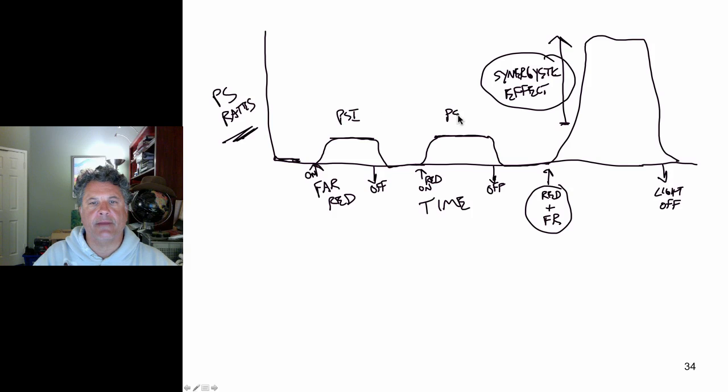Remember, photosystem 2 has a reaction center with an absorbance peak at 680 nanometers, whereas photosystem 1 has a reaction center with an absorbance peak at 700, that is far red light, and P680 represents red light. So here we see the synergistic effect of utilizing both photosystems in producing photosynthesis.